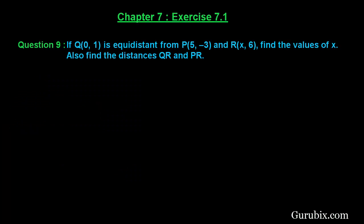Welcome friends. Let us solve question number 9 of Exercise 7.1 of Chapter 7. The question says: if Q, whose coordinates are (0, 1), is equidistant from the point P, whose coordinates are (5, -3), and the point R, whose coordinates are (x, 6), find the value of x and also find the distances between Q and R, and P and R.